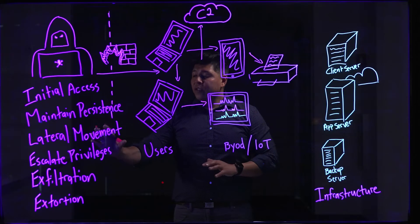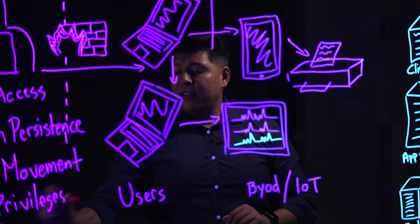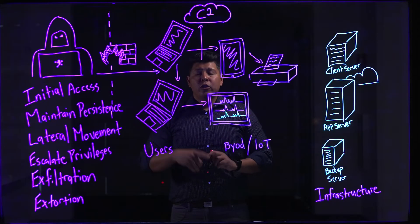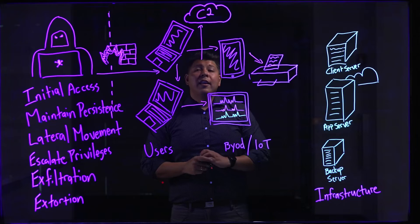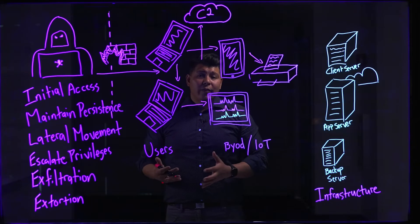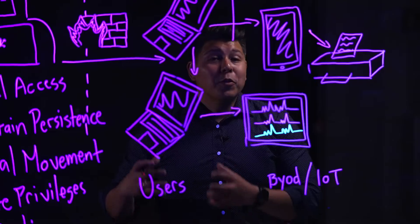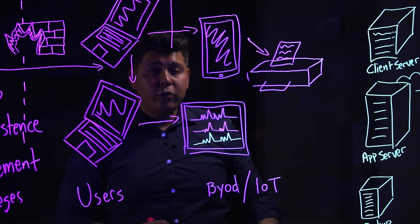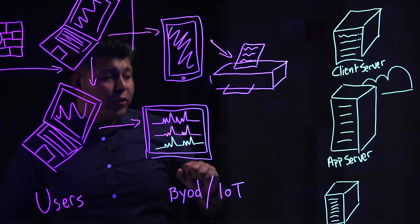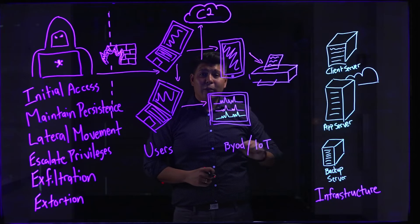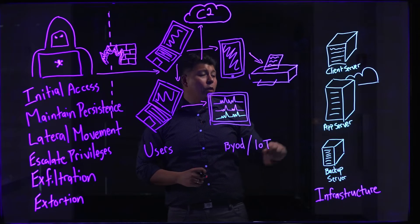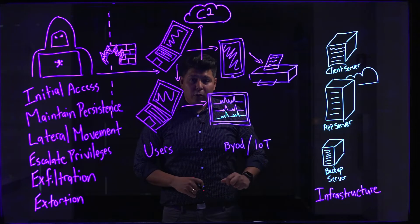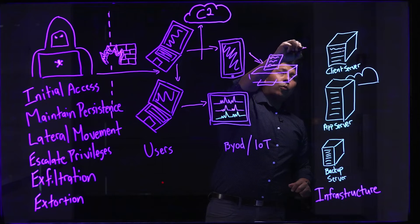Once they've moved laterally, now they need to escalate their privileges. They probably have user access to devices on the network, but now they need to get administrative access because they know the most valuable data is really in the infrastructure — on things like client servers. Maybe there's an active directory server they have access to, or an application server that might be misconfigured, or a backup server.